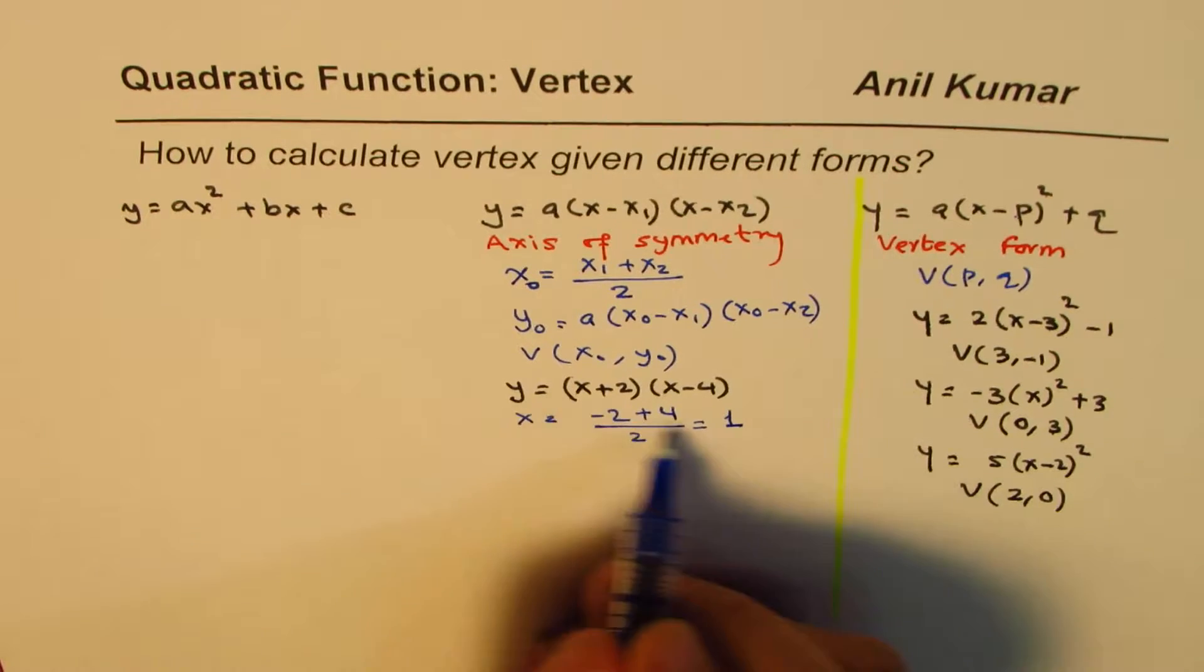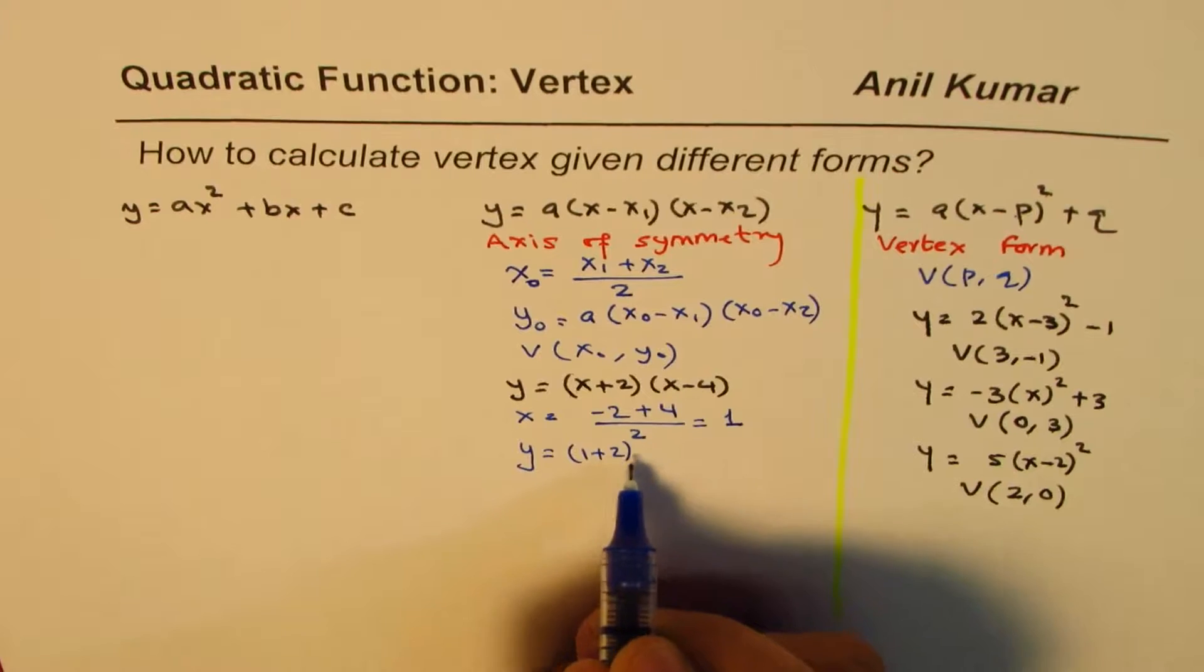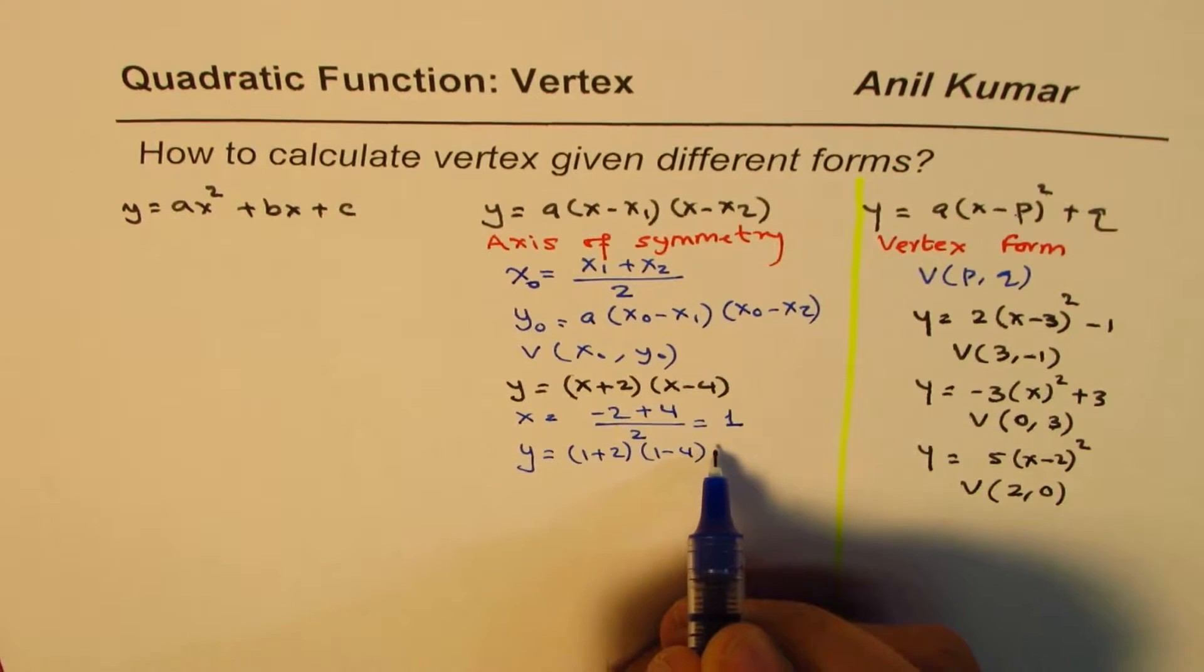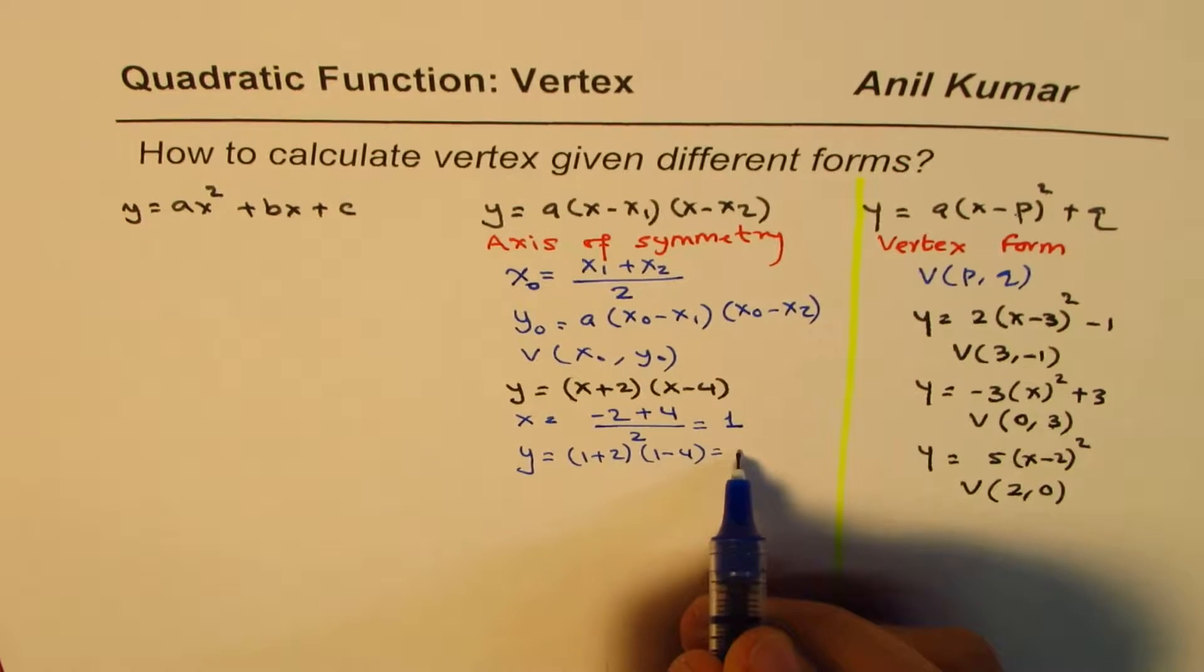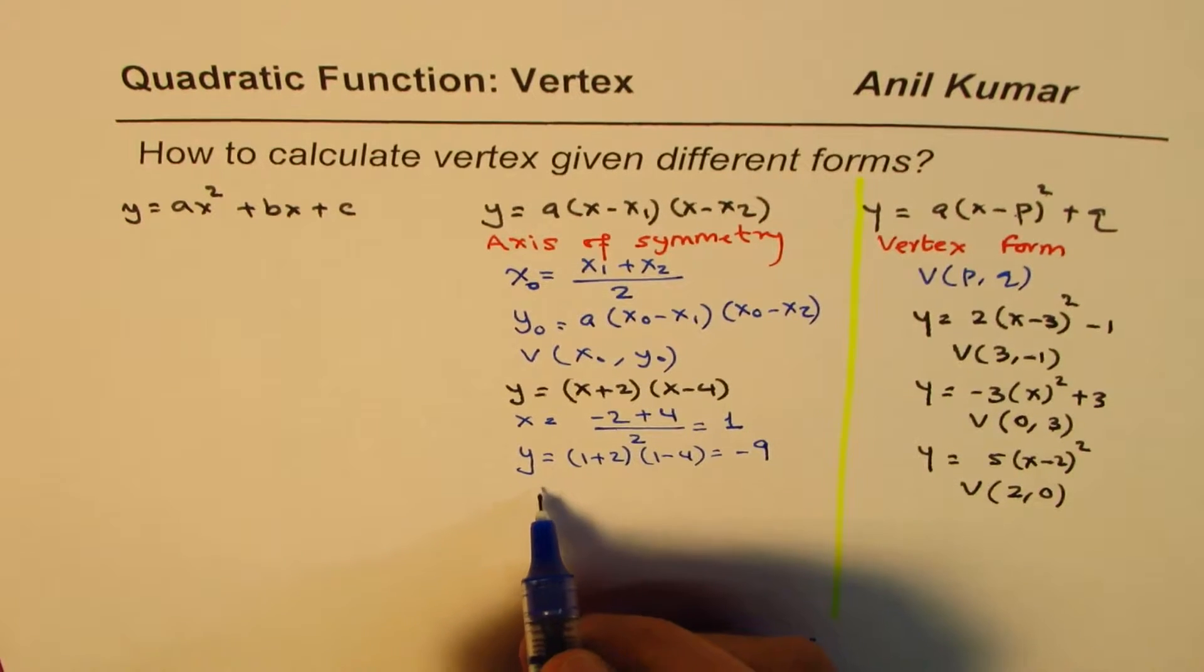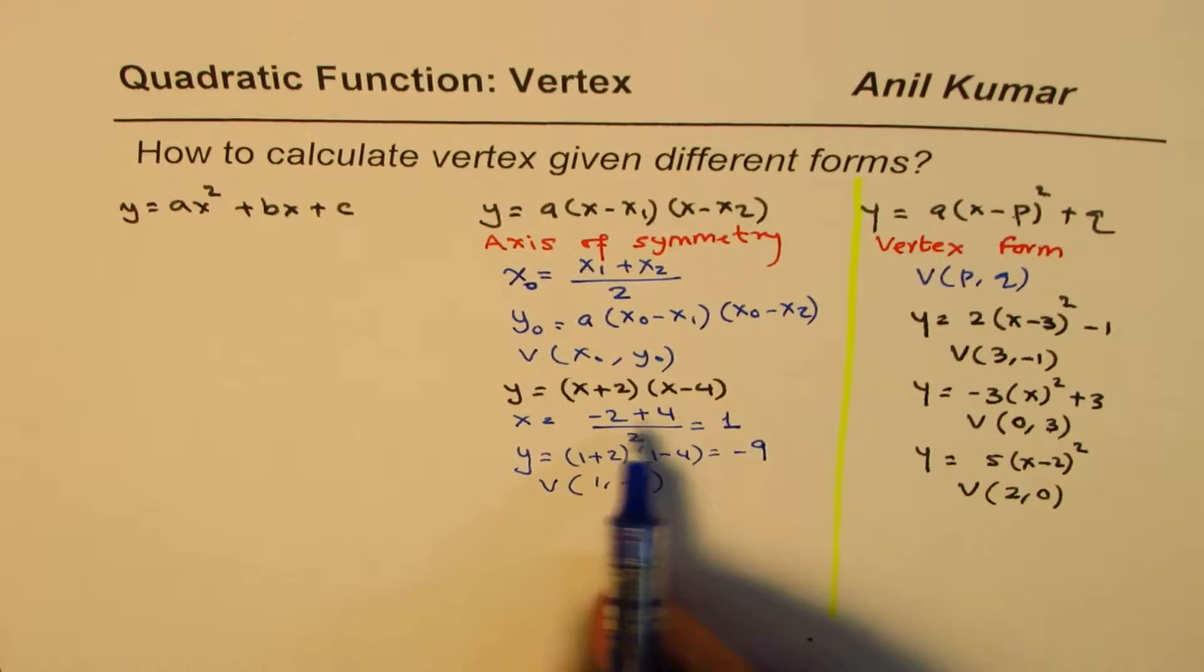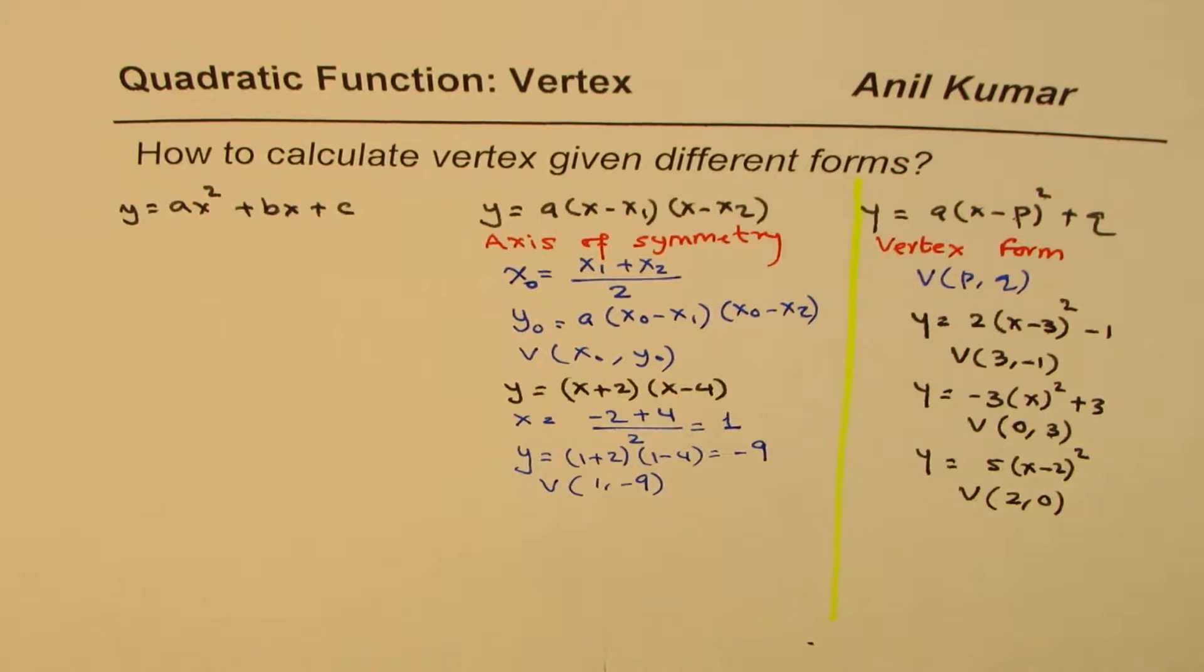So that gives you 4 minus 2 is 2, 2 divided by 2 is 1. Now you substitute 1 here. So y will be equals to (1 plus 2) times (1 minus 4), which is 3 times minus 3, or minus 9. So the vertex here is equal to x is 1, y is minus 9.